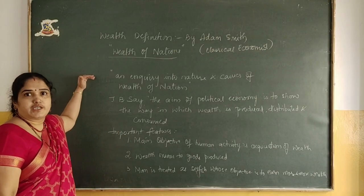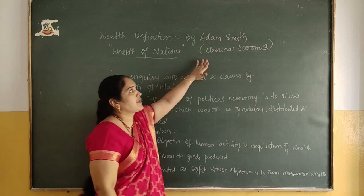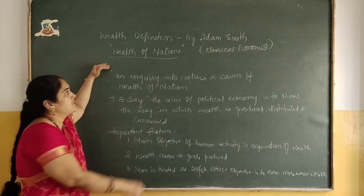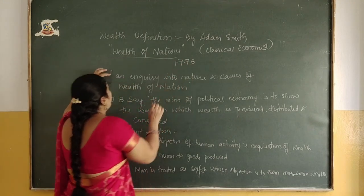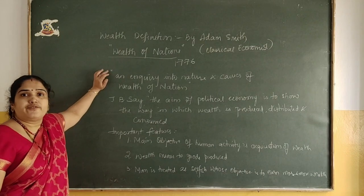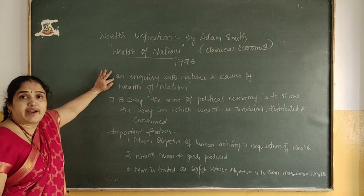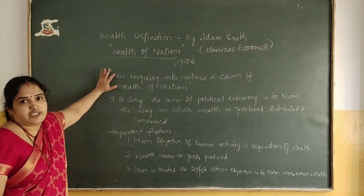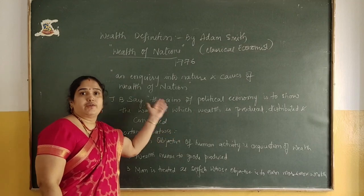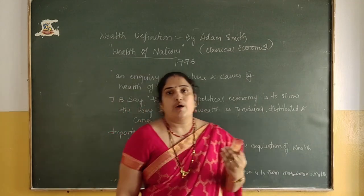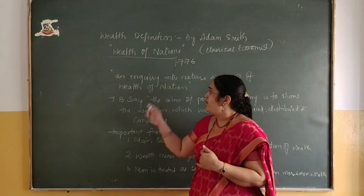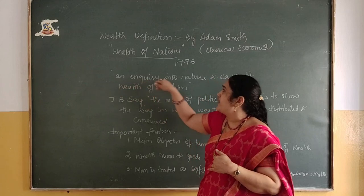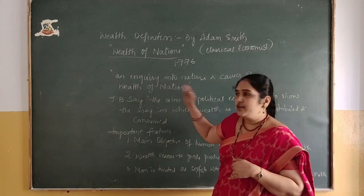The wealth definition is defined by Adam Smith, who is a classical economist. In his book 'Wealth of Nations' in 1776, he regarded economics as the wealth of nations. He defined economics as an inquiry into the nature and causes of the wealth of nations — meaning whatever we get through nature, whatever natural things we have, whatever goods have been produced, will be regarded as wealth of the nations.